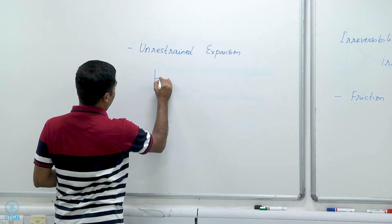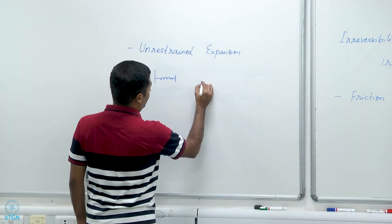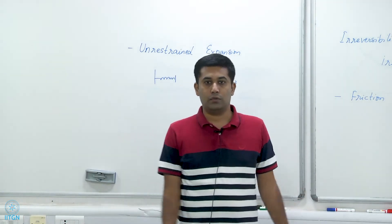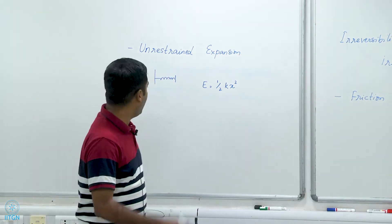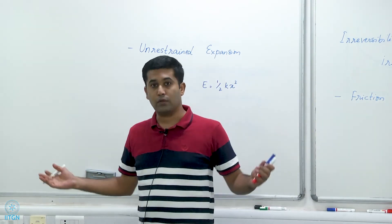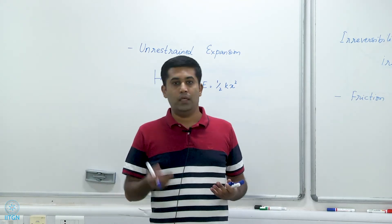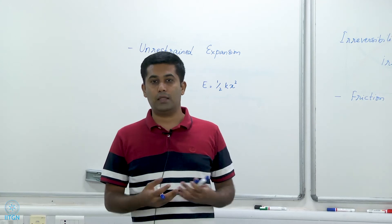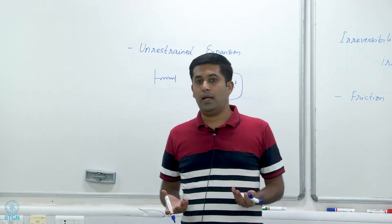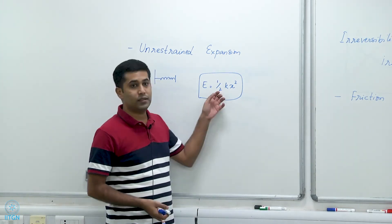Another cause of irreversibility is unrestrained expansion. Consider a spring that is compressed. The energy stored in it is ½kx², where x is the displacement from the equilibrium position and k is the spring constant. If I suddenly release the spring and the restraining force is removed, the spring expands and the energy is lost because the spring is not doing any work — it is not pushing any mass or pulling a weight up. This energy is ultimately converted to heat, heating both the spring and the surrounding air by a very small amount.